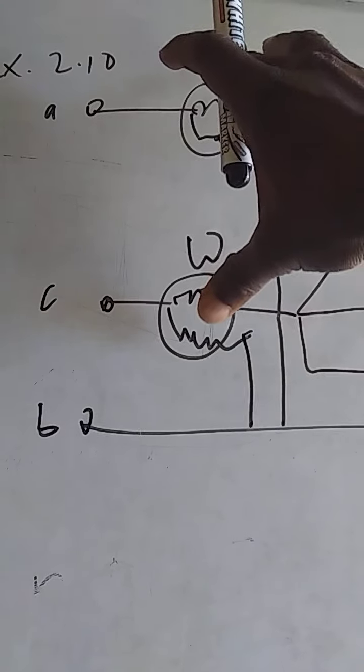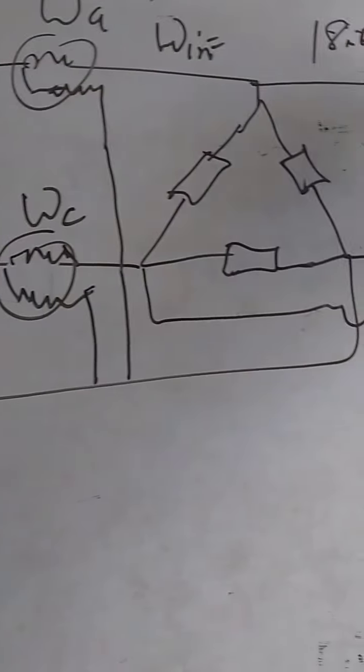With power factor of 0.86, then now you need to determine the current drawn and the power taken from the line. So, we want to know the power drawn, the total power drawn by this, after another load, the power drawn by WA and WC, after another additional load has been connected to the line.